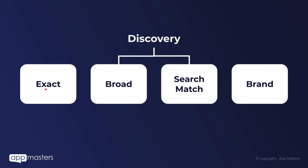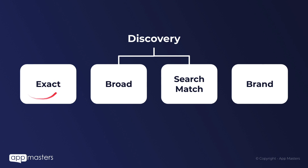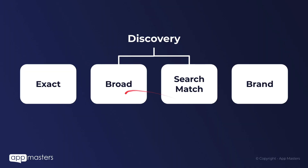In part one of this Apple search ads series, I showed you the campaign structure and we set up the exact match campaign. In this video, I'm going to show you the two campaigns that are really going to allow you to scale this marketing channel. Here's our campaign structure — exact, broad, search match, and brand. These two discovery campaigns are where we're letting Apple do most of the work, and these are the ones I've found to be scalable. With exact match, you'll hit a ceiling unless you keep adding keywords, but broad match and search match let Apple do the work and allow us to scale without going crazy with cost per install.